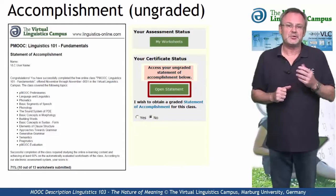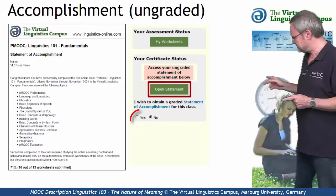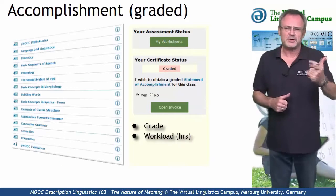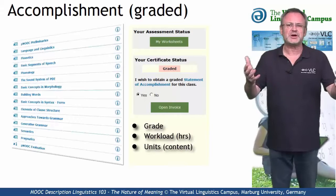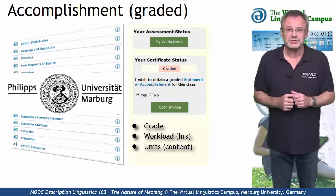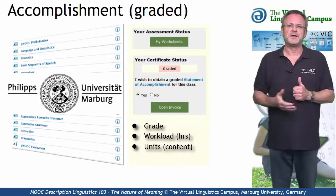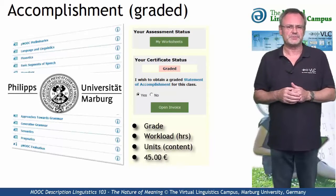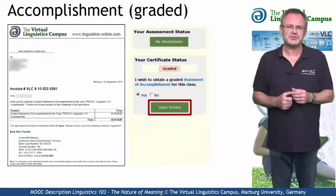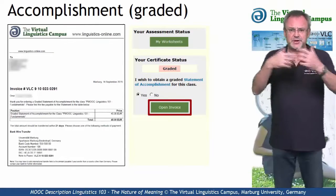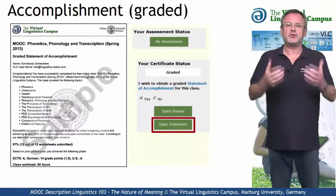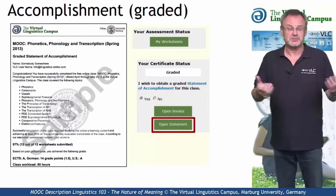If you want to obtain a graded statement of accomplishment, select Yes. This most advanced option of certification includes your precise grade, the workload in hours, and a complete list of all the tasks you successfully submitted. This graded statement of accomplishment is issued by Marburg University in conjunction with the Virtual Linguistics Campus, and it involves a fee of currently 45 euros. Once you have satisfied the conditions, you first have to open the invoice and transfer the money to Marburg University. Once your payment has been accepted, you can download your personal graded statement of accomplishment via mouse click.